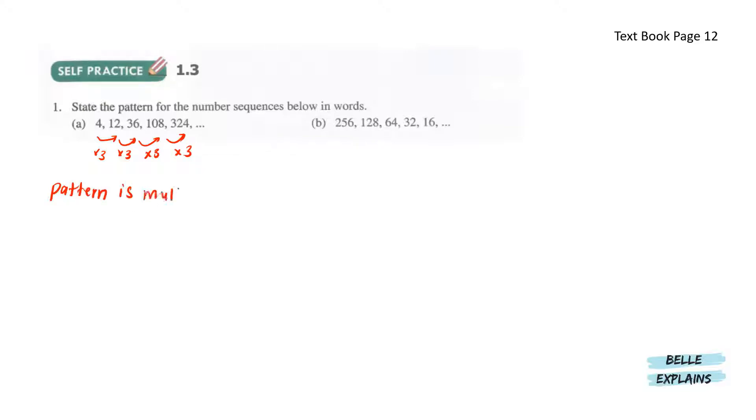So here we have 4, 12, 36, 108, 324. We can see from 4 to 12 is times 3, 12 to 36 is times 3, 36 to 108 is times 3, and the next is also times 3. So here we say that the pattern is multiply the number before by 3.